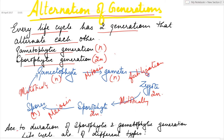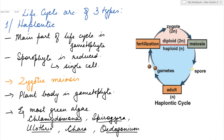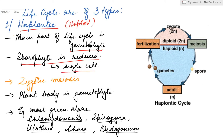According to the duration of the sporophytic and gametophytic generations, life cycles are divided into three types. The first is haplontic. As the name shows, the main part of the life cycle is haploid — that is, the gametophyte — while the sporophytic generation is very much reduced. It is represented by a single cell, the zygote, which immediately undergoes meiosis. Hence, in this case, zygotic meiosis is seen.